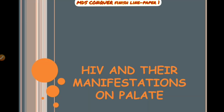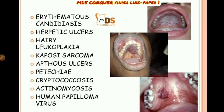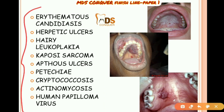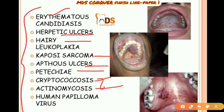Fungal infections: deep fungal infections like histoplasmosis, cryptococcosis, blastomycosis, and mucormycosis all involve the soft palate, causing necrosis and palatal perforation. HIV-related lesions on the palate include erythematous candidiasis, herpetic ulcers, leukoplakia, Kaposi's sarcoma, aphthous stomatitis, petechiae, cryptococcosis, actinomycosis, and papillomavirus infections.